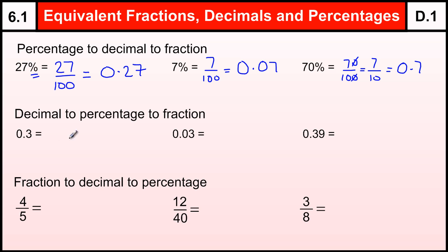Decimals percentage to fraction, so 0.3. When we're trying to change the decimal to a percentage, we're going to go reverse of dividing by 100, we're going to times by 100, so 0.3 times by 100. Times them by 10 is 3. Times them by another 10 is 30.